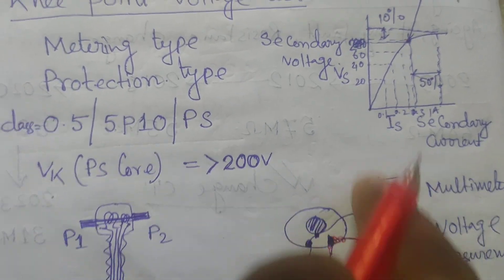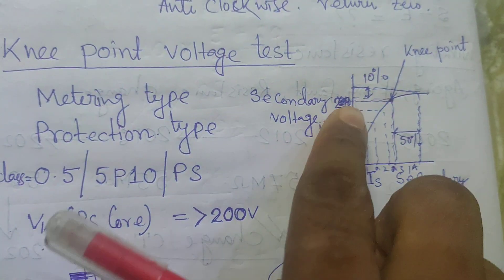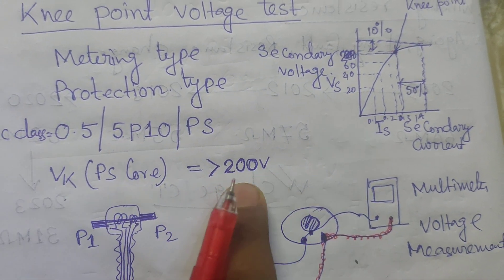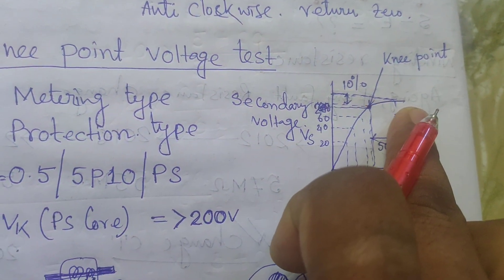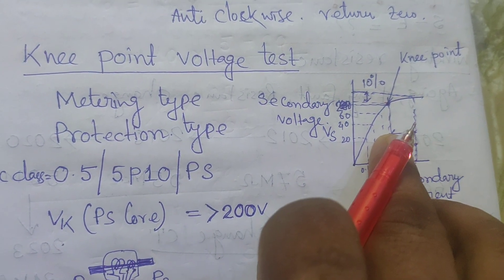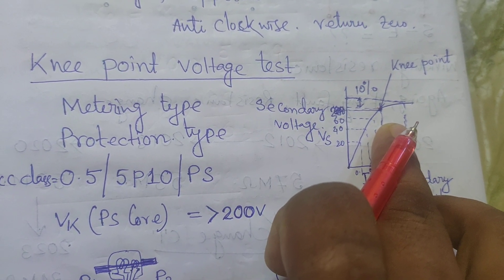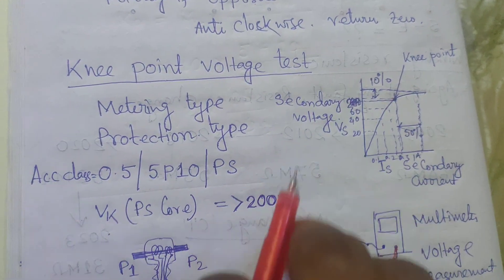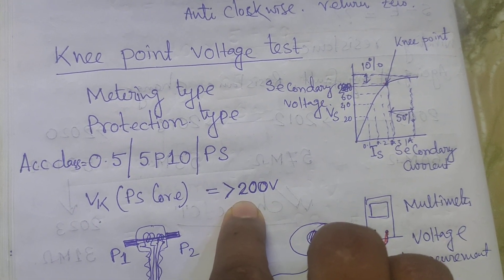Starting at 20 volts the current is 0.1A, then 40V gives 0.2A, 60V gives 0.3A, 80V gives 0.4A. When you reach the knee point voltage of 200V, you get approximately 0.8 to 1 ampere. Then increase the voltage by 10 percent - that means 220 volts - and if the current increases by 50 percent or more, that means the saturation point has been reached. Beyond this voltage, the CT becomes saturated and the secondary output will be zero - no protection and no metering. This test confirms whether the manufacturer's given knee point voltage is correct.